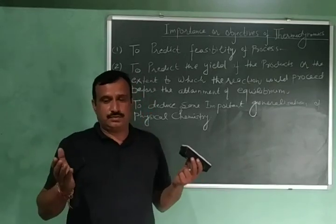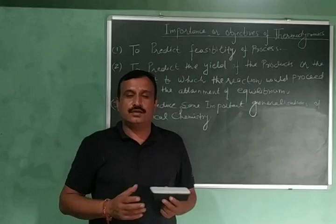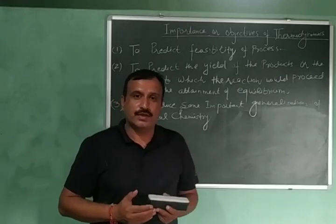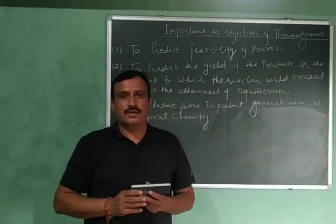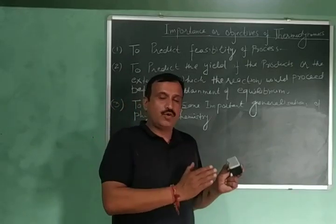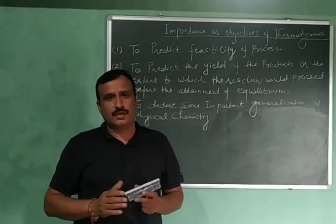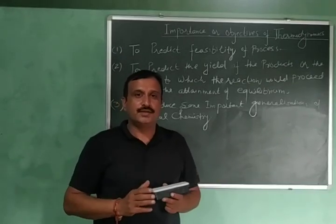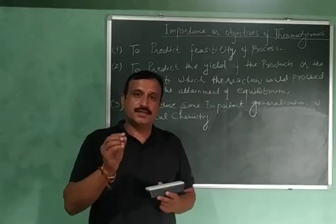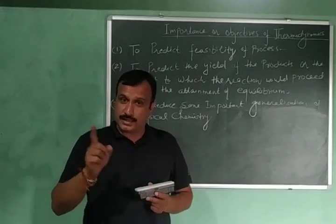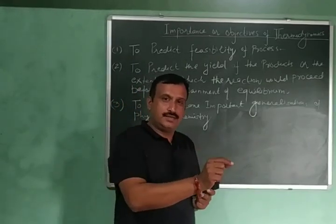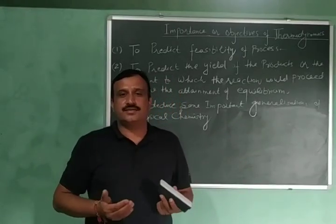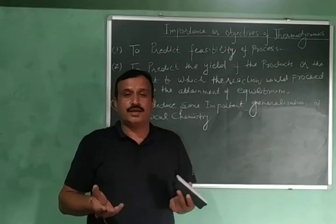LPG involves butane and isobutane. When butane burns in excess supply of air, it gives us carbon dioxide, water vapours, and energy. So those were the two types of spontaneous processes. The second thing to recapitulate is the relation between energy and stability. We have studied that a system at a high energy state is unstable, and a system at a lower energy state is stable.